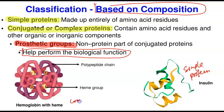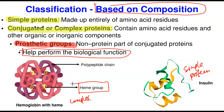Conjugated or complex proteins contain amino acid residues plus other organic or inorganic components. These non-protein parts help the protein maintain its native structure and perform its function; they are called the prosthetic group. Hemoglobin is a complex or conjugated protein. It has four polypeptide chains — two alpha chains and two beta chains — and each chain has a heme group (the prosthetic group) that helps hemoglobin transport oxygen in the blood. With that, we have come to the end of this lecture. Thank you for listening.